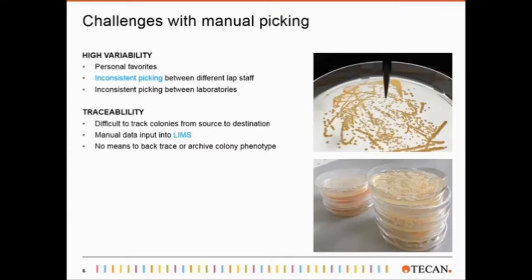Traceability. By hand, it is very hard to trace colonies from source to destination and throughout the whole process. Writing all the data manually into LIMS is a pain. And once picked, the morphology or the look of the colony is gone and forgotten. But sometimes it is really nice to have the chance to go back and have another look at the colony that maybe gave the best result, just in order to learn or to categorize. So sometimes automation is not about speed, but simply about standardization and process traceability.